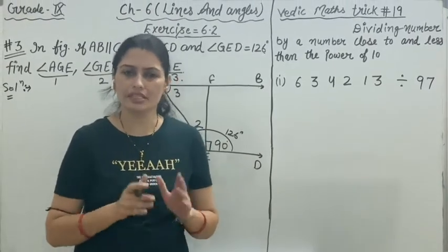Now, angle AGE is equal to angle GED, how? Because AB and CD are two parallel lines and GE is a transversal, and we know that alternate interior angles are equal. We already discussed about this concept, those who missed can view the link in the description box.